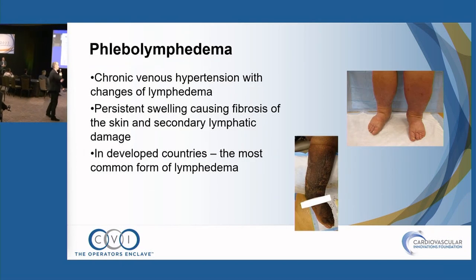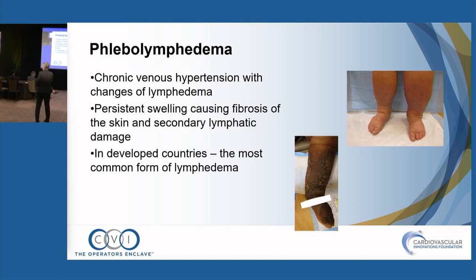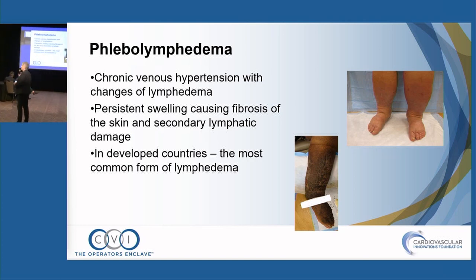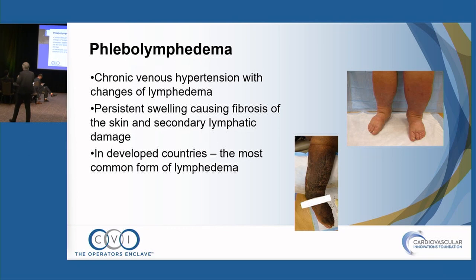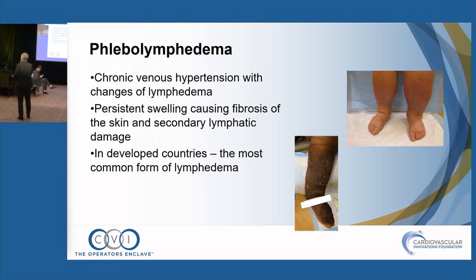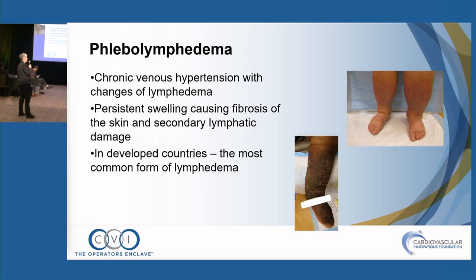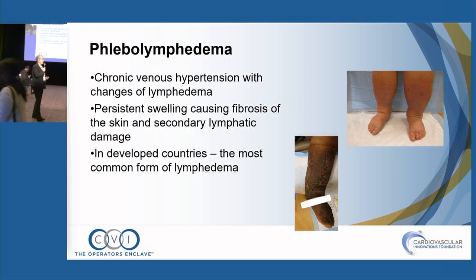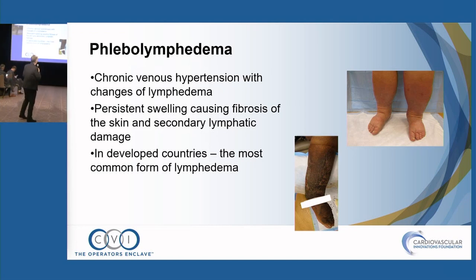One of our most common overlap syndromes is what we call phlebo-lymphedema, where longstanding chronic venous hypertension secondarily involves the lymphatics, giving characteristics of both. We see typical skin changes but also very fibrotic skin with secondary lymphatic damage, dorsal hump, and squared toes.